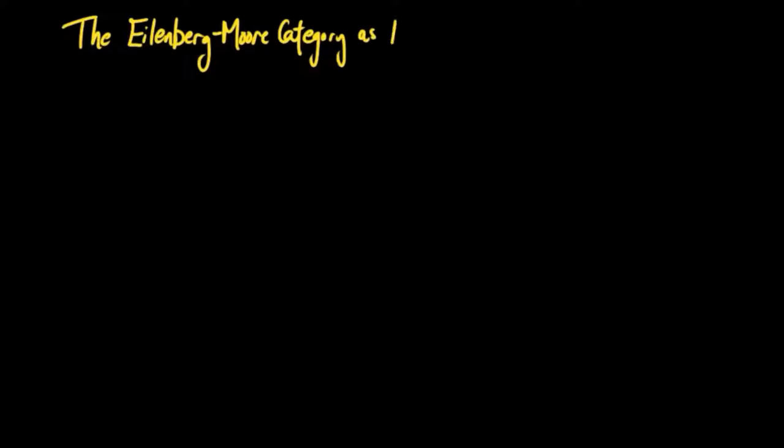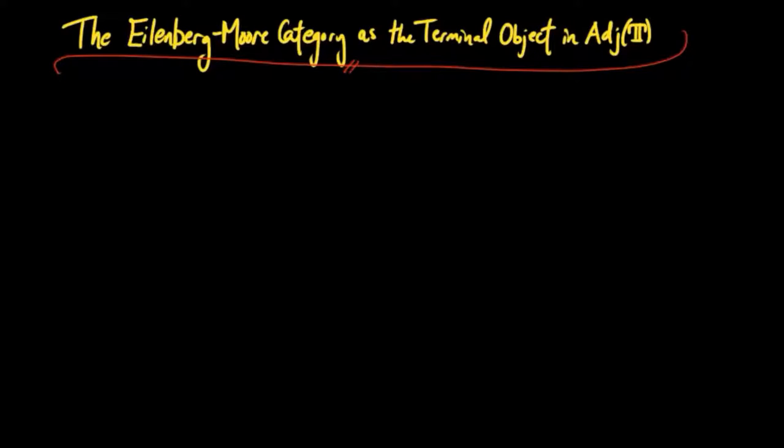In this section, we show that the Eilenberg-Moore category for a monad T is a terminal object in the category of T-inducing adjoint situations.